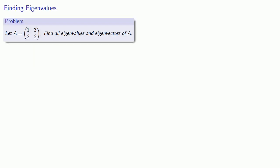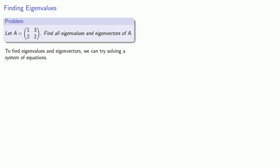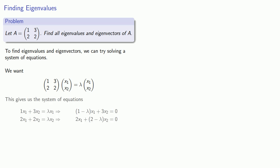Let's see how we can solve the problem of finding eigenvalues and eigenvectors. Let A be a 2 by 2 matrix. We want to find all eigenvalues and eigenvectors of A. We can try solving a system of equations: we want the linear transformation applied to a column vector (x1, x2) to give us a scalar multiple of that column vector, which gives us a system of equations with a corresponding coefficient matrix.